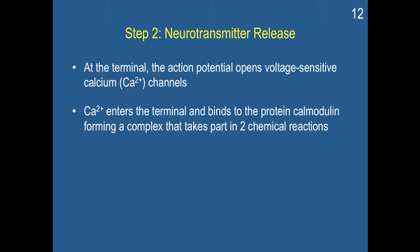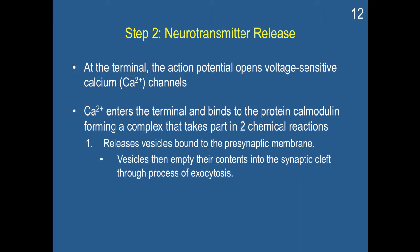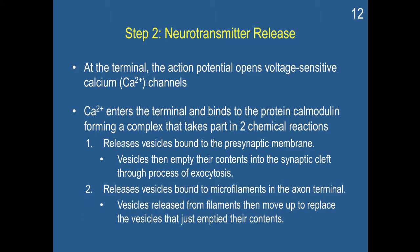Step two is neurotransmitter release. Once neurotransmitters in vesicles are ready, the action potential travels down the axon and at the axon terminal opens voltage-sensitive calcium channels. Calcium enters the axon terminal and binds to the protein calmodulin, which forms a complex that takes part in two chemical reactions: first, it releases vesicles bound to the presynaptic membrane, which then empty their contents into the synaptic cleft through exocytosis; second, it releases vesicles bound to microfilaments, which then move up to replace the emptied vesicles.